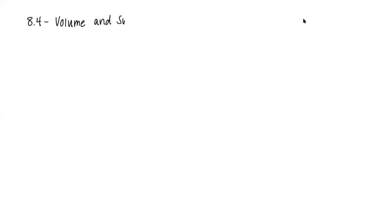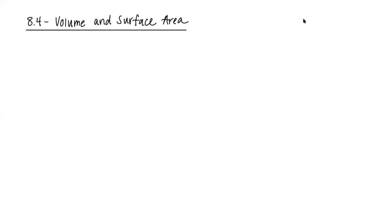We have one final section to go through, and then you are officially done with material for this class. Our last section is 8.4, and it's going to be about volume and surface area. In section 8.3 we worked in two dimensions, where we could find area and step down one dimension to talk about perimeters. Now we're moving into 3D.